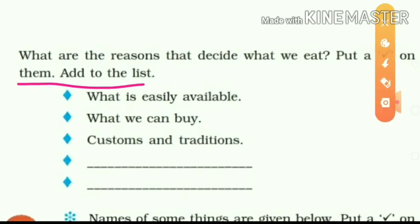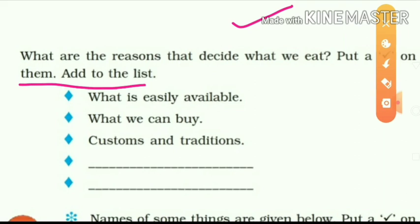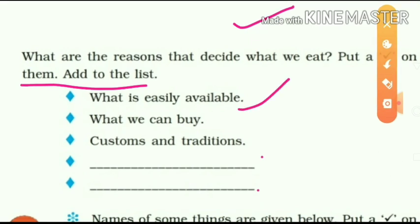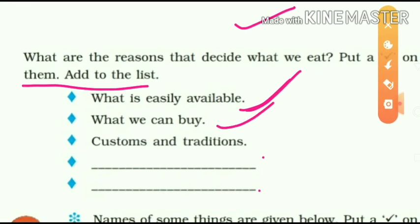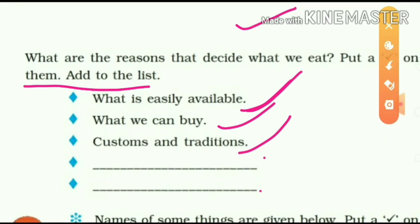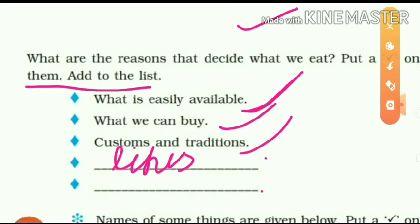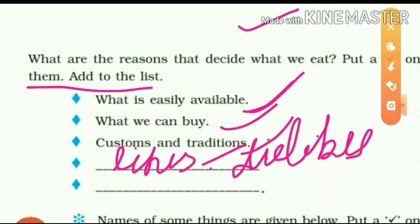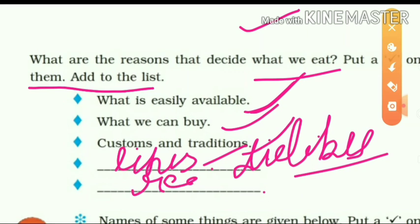What are all the reasons that decide what we eat? You have to tick them. First: what is easily available — jo cheezein humen aasani se mil jaati hain, hum woh kha lete hain. Second: what we can buy — jo hum khareed sakte hain. Third: customs and traditions — jo cheezein shuru se khaate hain. Fourth: likes and dislikes. Fifth: area or region.